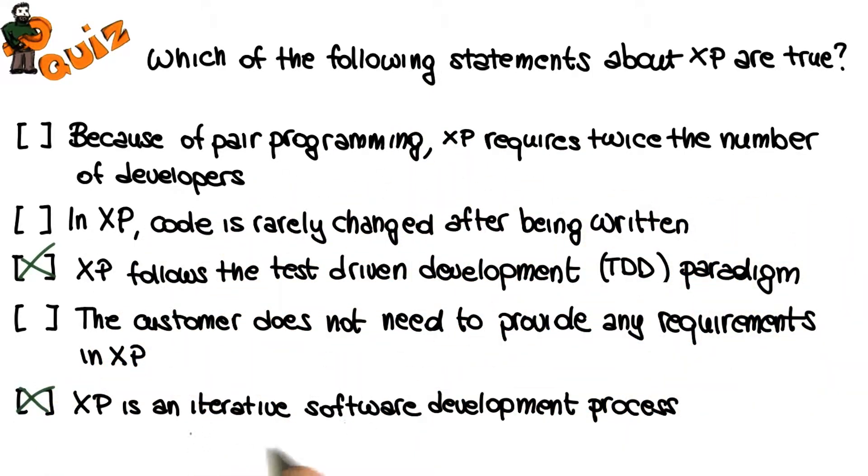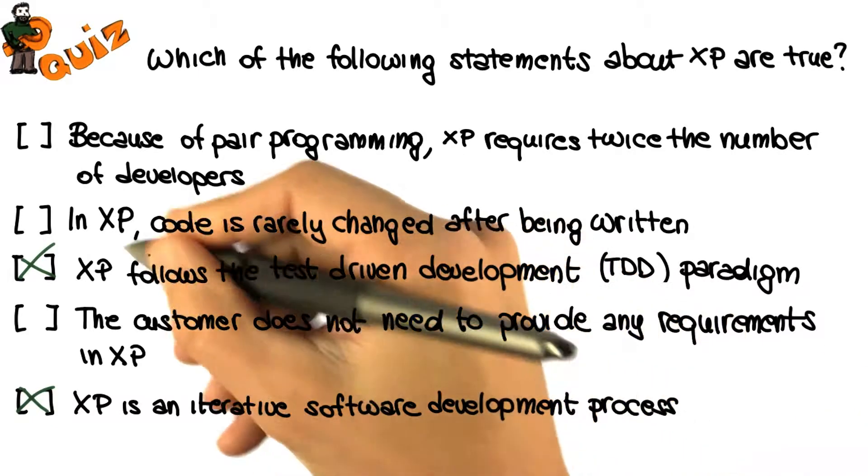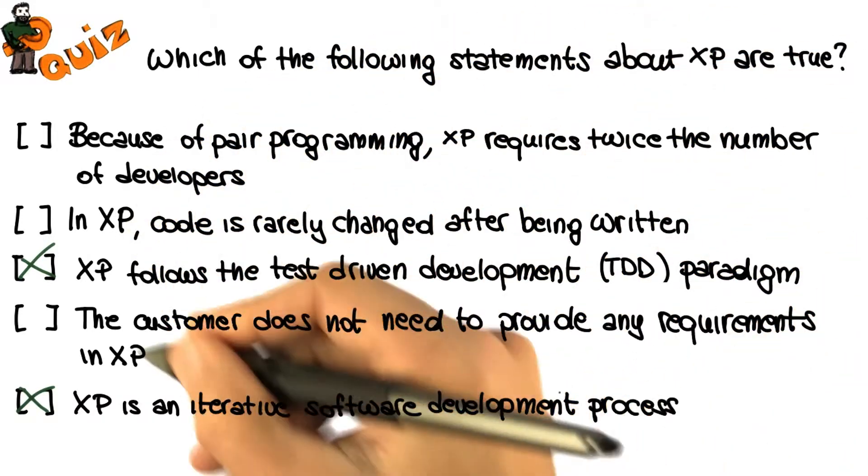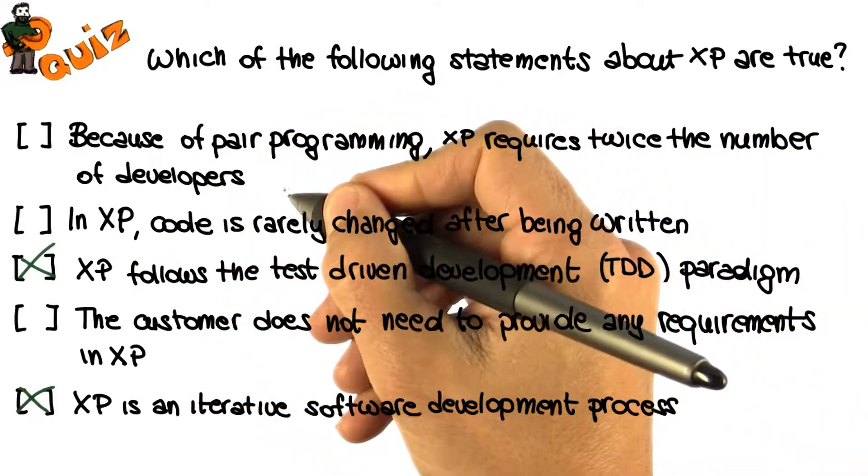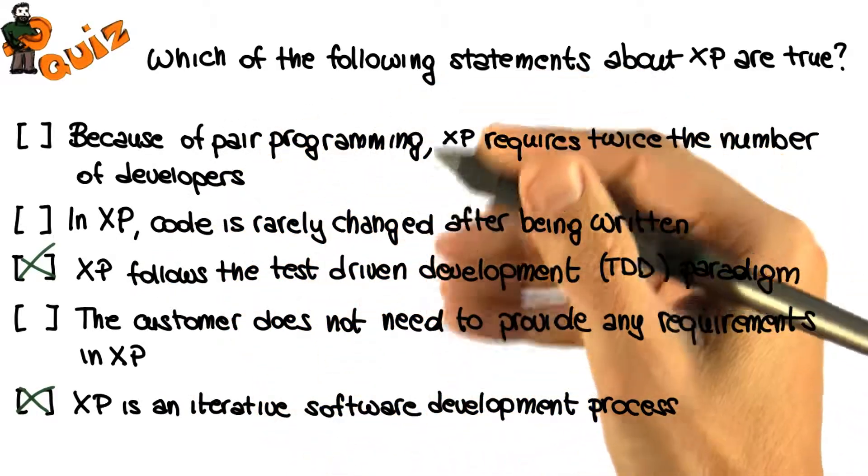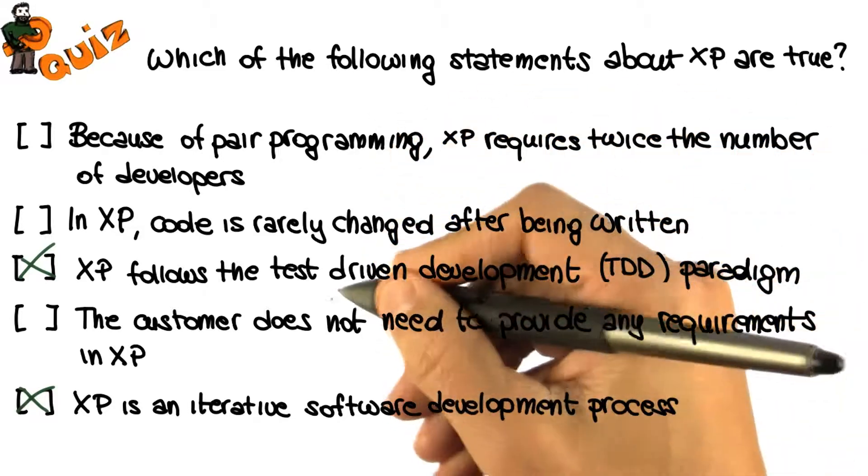Finally, XP is definitely an iterative software development process. In fact, we saw that XP is based on subsequent iterations of the same cycle, in which we select from a set of story cards or user stories, the stories that we want to implement in the next iteration.